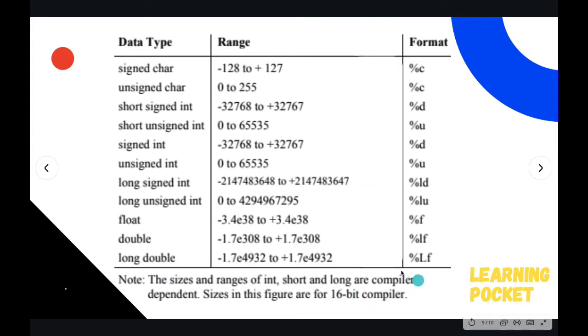And in unsigned it is simply doubled: 0 to 65535. Keep in mind, these all ranges are for 16-bit compiler. In your case, in your system, the ranges may be more than this. In my system itself, I have this range for the integer itself. So in most of the modern computers or today's computers, you must be having this range for int, not the long signed int.